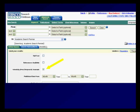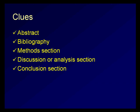So, I should look for the surface features like abstract, bibliography, methods, discussion, and analysis. Then what should I do?